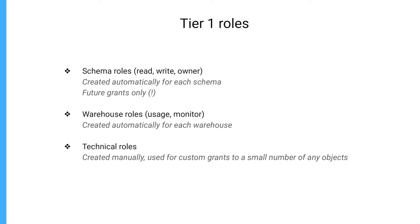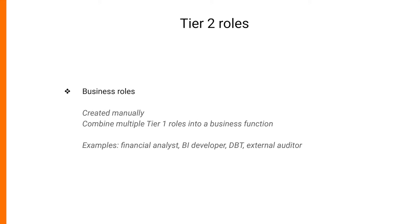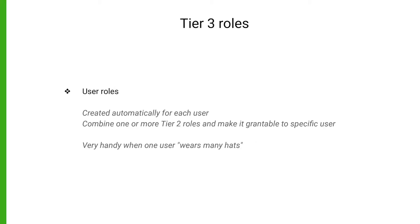You also have technical roles which are created manually and are used to grant custom access to a small number of objects. On the second level, you have business roles which combine multiple level-one roles into a single business function — for example, a financial analyst, BI developer, a dbt script, or an external person. On the third level, you have user roles, which are created automatically and are used to grant one or more business roles to specific users. This is very useful when employees wear many hats and combine multiple roles within your organization.